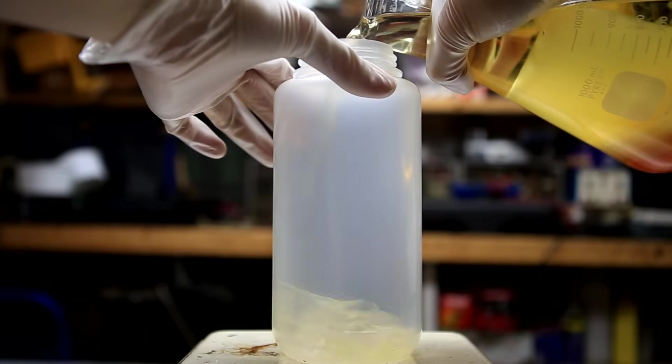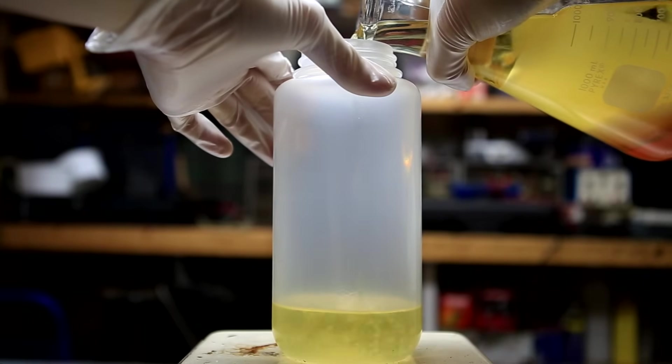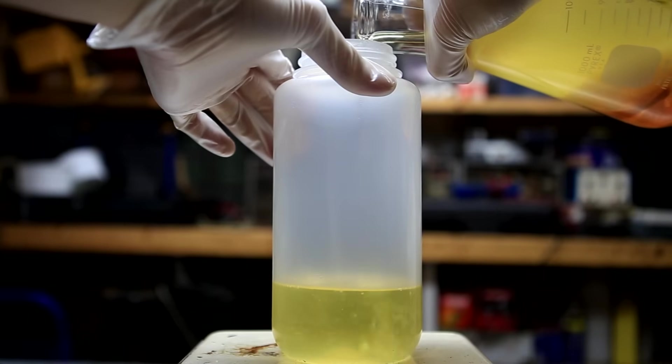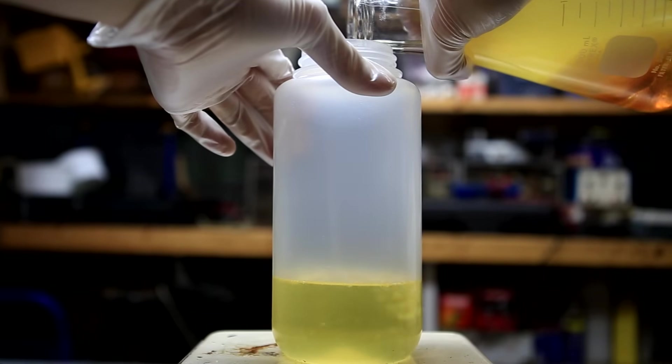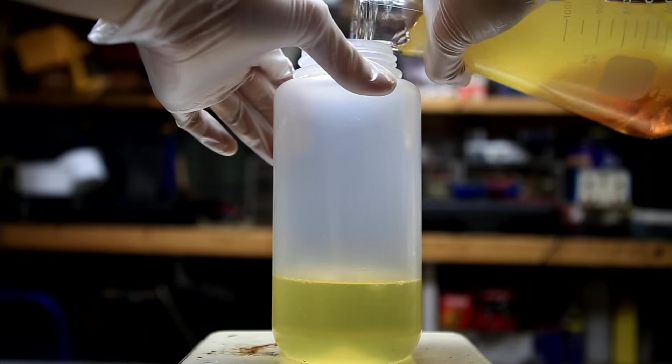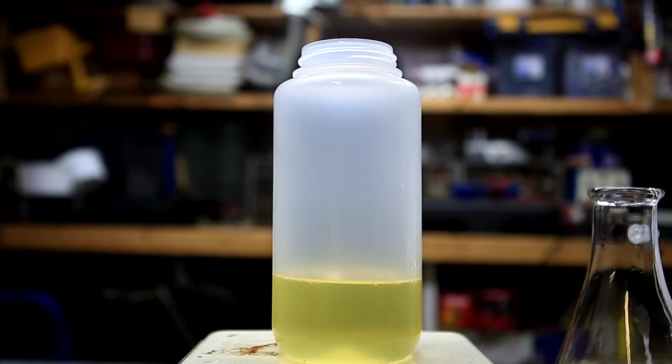The liquid portion of the upper layer containing mostly biodiesel was transferred to another container. This biodiesel is crude, but all that really needs to be done to it to make it useful is to wash it with a little bit of water and then to dry it. However, I'm not very interested in biodiesel, so I discarded it.